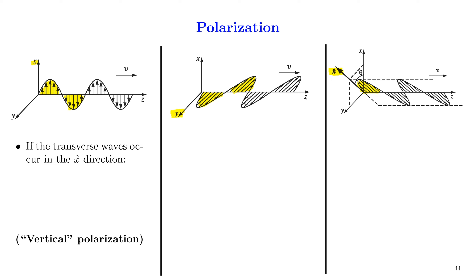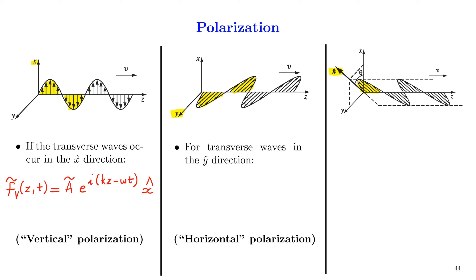Now, for the transverse waves that are occurring in the x direction, we shall write the expression for wave motion as f_v(z,t) equal to A_complex times e^(i(kz − ωt)). So we assume that it is a wave moving along the positive z direction. And to indicate the polarization of the wave, we shall add x-hat. And we call this wave a vertically polarized wave. For transverse waves whose polarization is along the y-hat direction, we shall write f_h(z,t) equal to A_complex times e^(i(kz − ωt)) along the y-hat direction. And such kinds of waves will be known as a horizontally polarized wave.